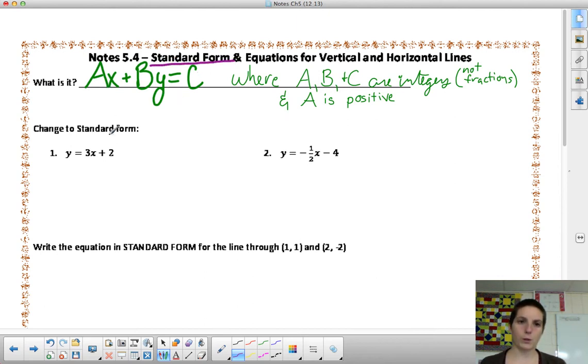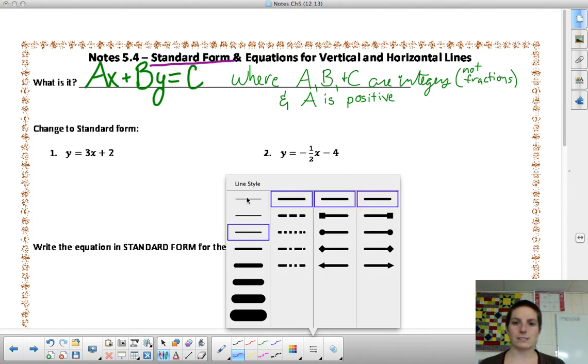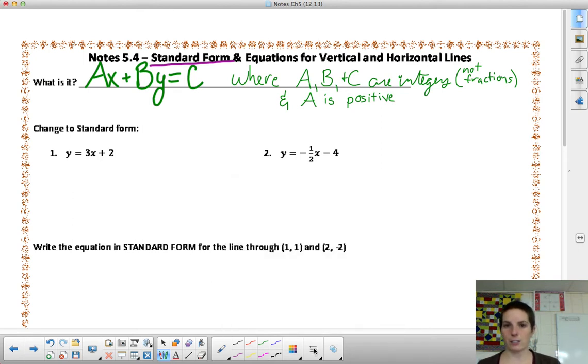When we look at standard form, we're looking at Ax + By = C, where A, B, and C are integers, which for us just means that they are not fractions, and A is positive. B and C are allowed to be positive or negative. So, no fractions, and A must be positive.